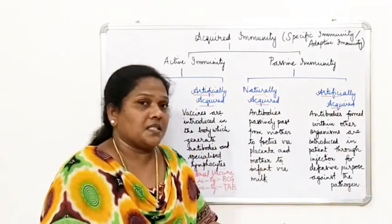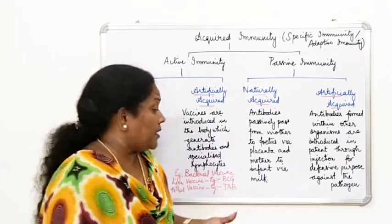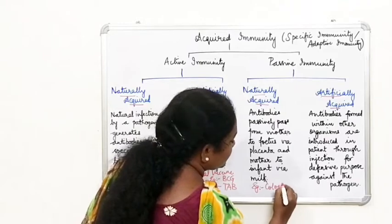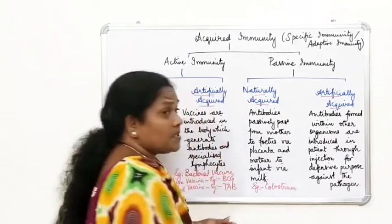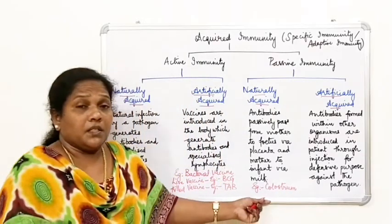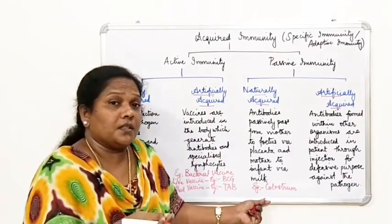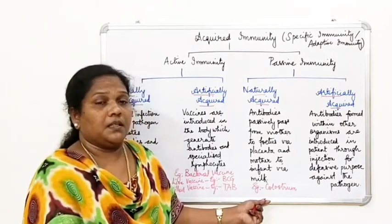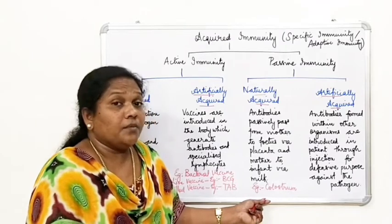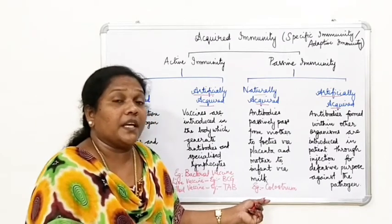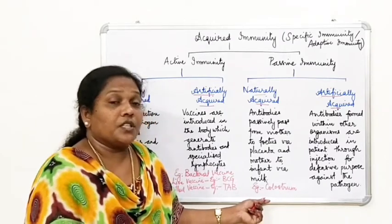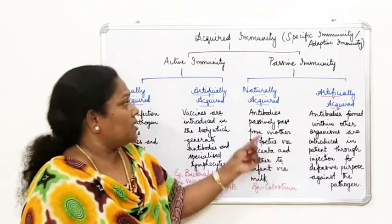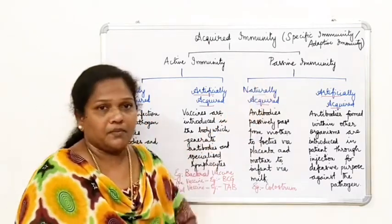A very good example of naturally passive immunity is colostrum — the initial amount of milk produced in the mother, given to the baby immediately after childbirth. Colostrum is rich in antibodies, specifically IgA (immunoglobulin A), which gives protection to the infant. This type of immunity is called naturally passive immunity.